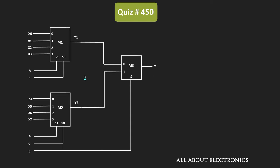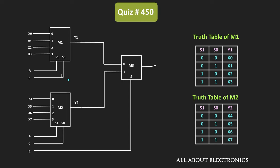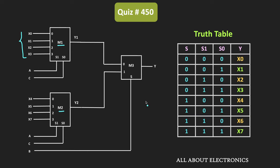Depending on the selection inputs A and C, these two multiplexers will select the specific input. For multiplexer M1, depending on the values of selection lines S1 and S0, any one of the 4 inputs will get selected. Similarly, for M2, any one of the inputs from x4 to x7 will get selected. Then depending on the value of selection input S, either Y1 or Y2 will get selected. So based on S, S1, and S0, out of the 8 inputs, any one will get selected.